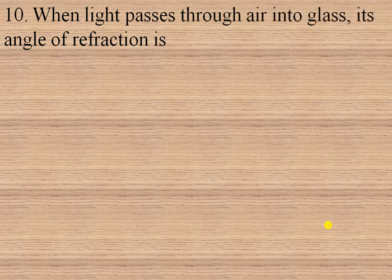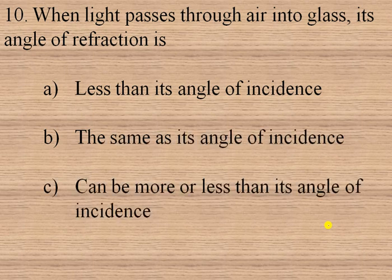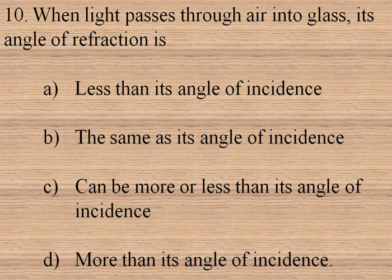The next question is: when light passes through air into glass, its angle of refraction is — less than its angle of incidence, the same as its angle of incidence, can be more or less than its angle of incidence, or more than its angle of incidence? Air is the rarer medium and glass is the denser medium, so light goes from rare to dense medium. When light goes from rare to denser medium it bends towards the normal, so the angle of refraction is less than the angle of incidence. Option A is the right option.